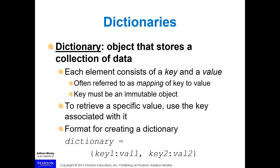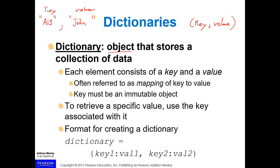The dictionary is an object in Python that stores a collection of data. Each element consists of what is called a key and a value — a key-value pair. You can imagine the idea of having an ID, something like A13, as the key, and a value like a name like John. These are key-value pairs and they can be whatever you want them to be.